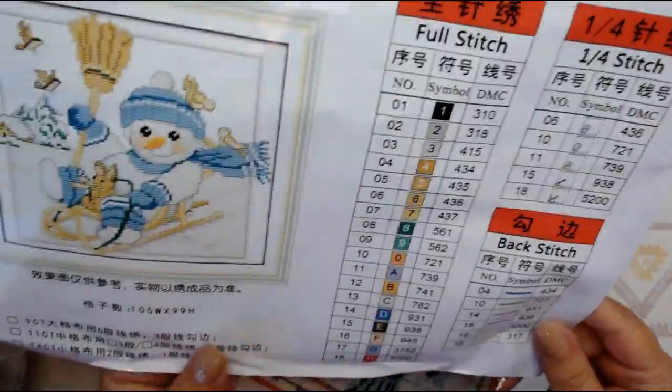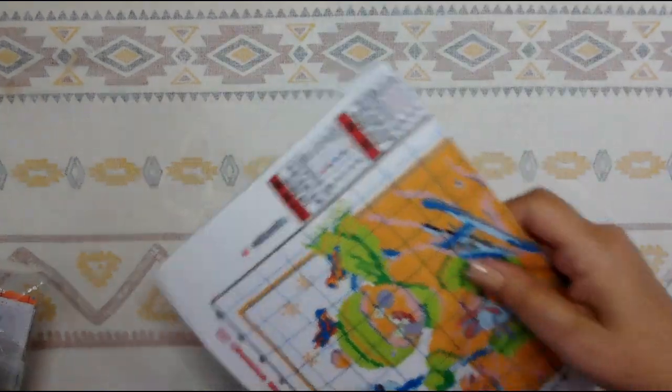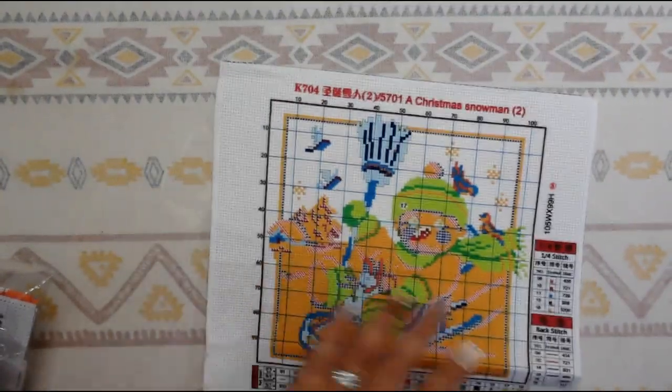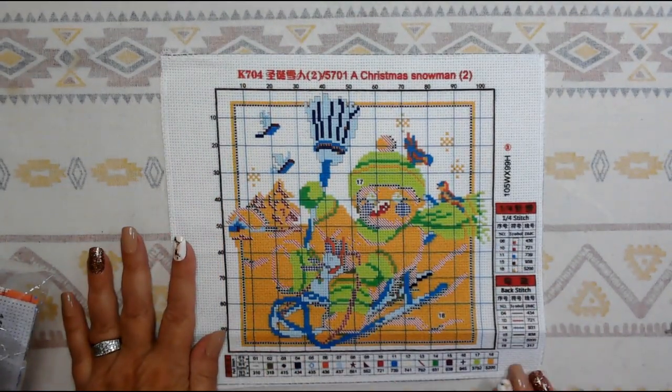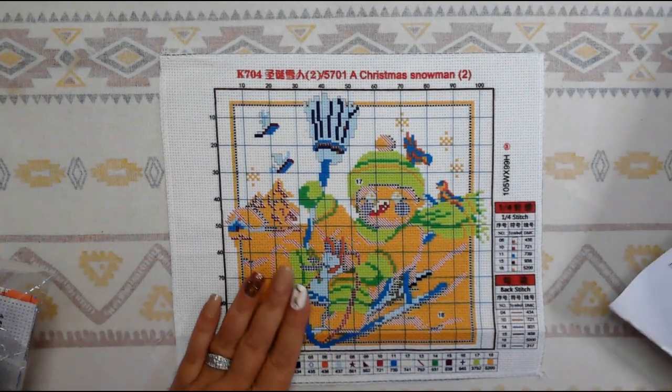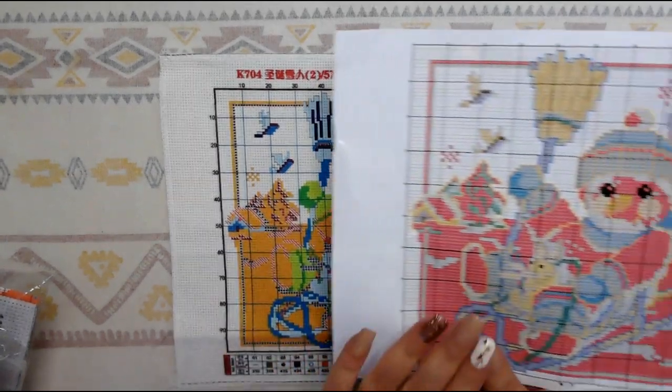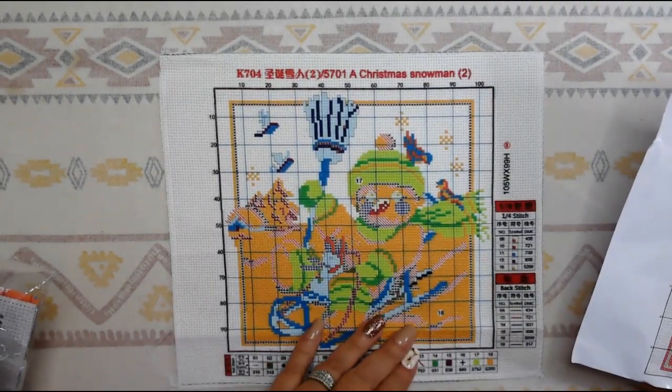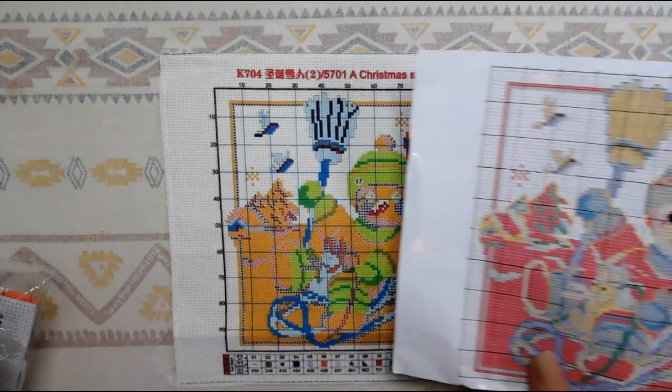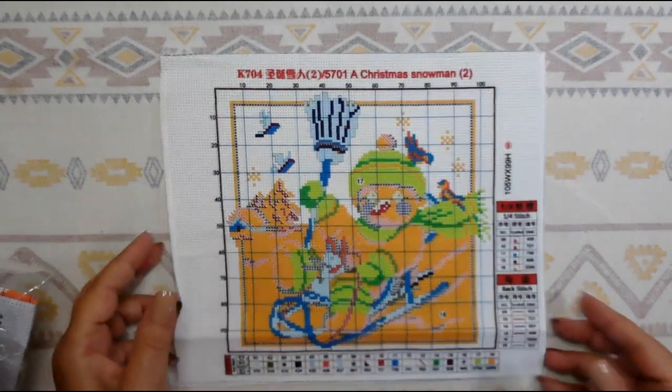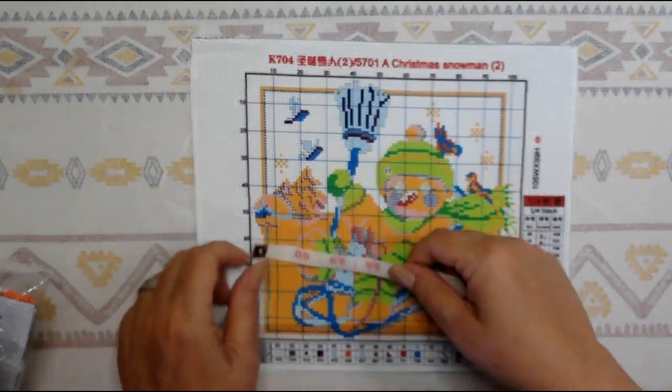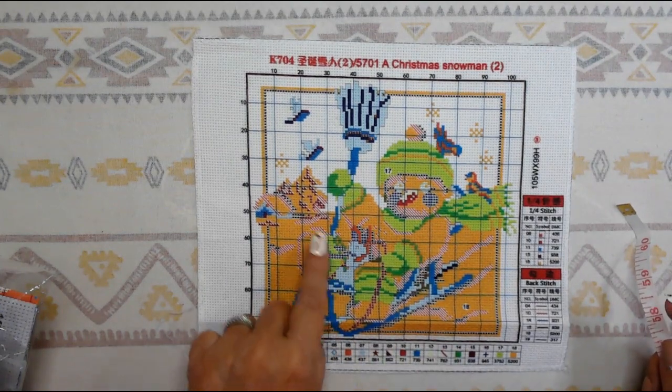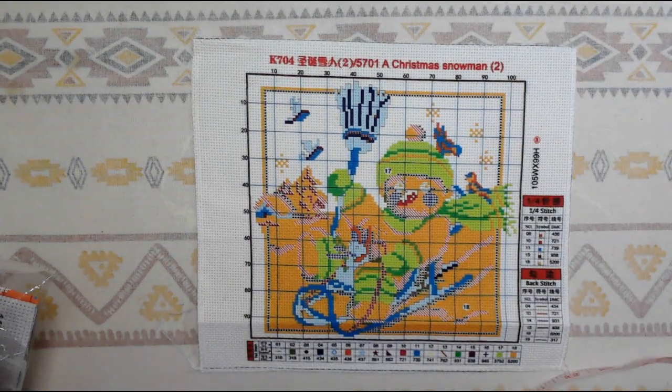Wonderful instructions. 105 stitches across by 99 high. This is the pattern with your product number and the name of the kit, your legend on the side. One thing about Joy Sunday for those of you that don't know, your symbols on your paper pattern are not going to be the same as on your actual fabric. So keep that in mind so you don't get confused between the two.